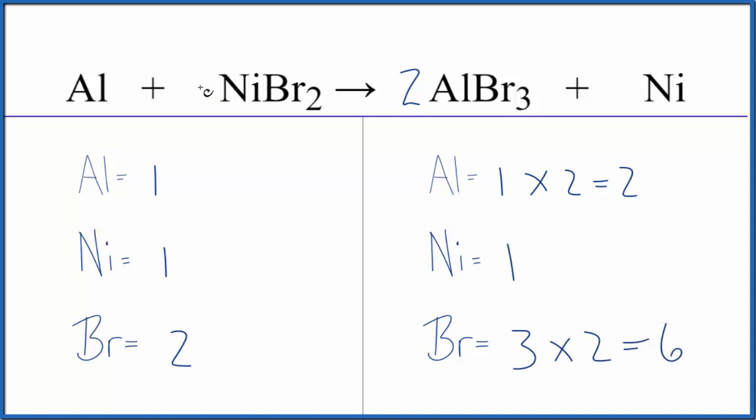Now I can just put a three in front of the nickel-2-bromide, the NiBr2. One times three, I have three nickel atoms, but this two times three, now the bromines are balanced, and it's pretty easy to finish up here.